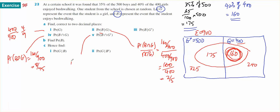Probability of bushwalking intersect not girl, or bushwalking intersect boy, which will be 175 on 900, which is 7 on 36.